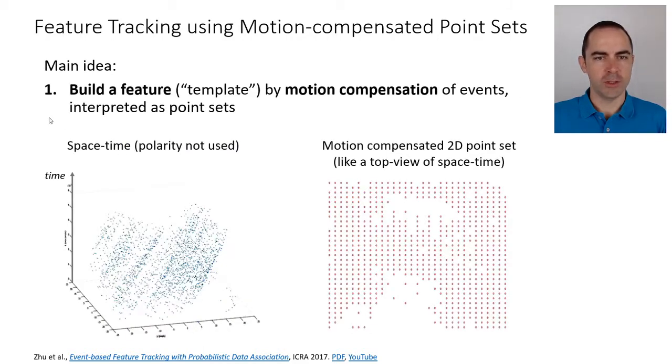Let's take a look at the two main steps. The main idea is that we are building these features or templates from the events directly by motion compensation, and then the events are interpreted as point sets. On the left we have a space-time representation of events: x, y, and time. Time is the vertical axis in this case, pointing upwards. The events have just one color, so polarity is not used. On the right you see what would be like a top view of this point set or point cloud, and this is just a projection on the horizontal plane at time equals zero.